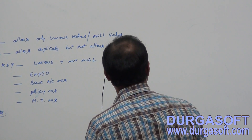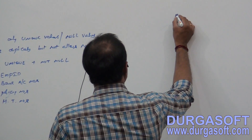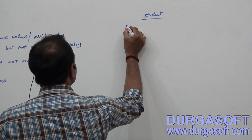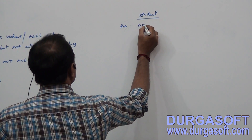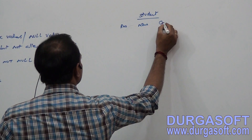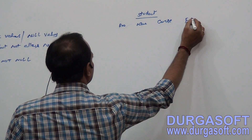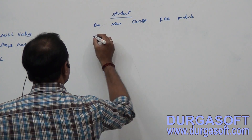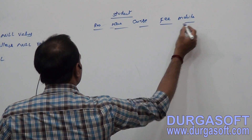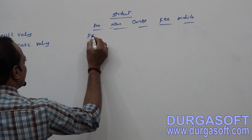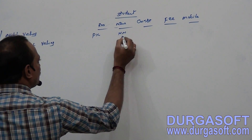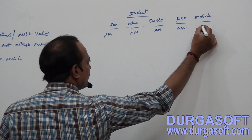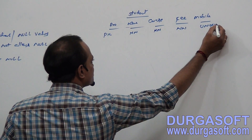If I define a student table, on this student table you are having role number, name of the student, course of the student, fee of the student, and mobile number. On the role number, I am defining primary key. On the name — not null constraint. On the course — not null. On the fee — not null. On mobile — unique constraint.